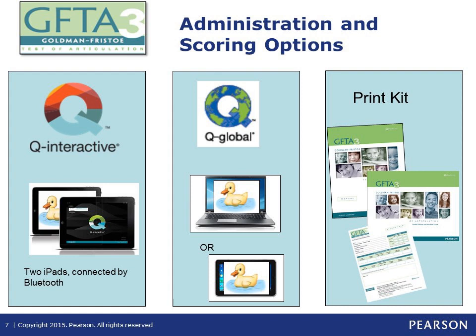Another digital offering is Q-global. Q-global offers digital administration on one screen, with a digital manual, a digital stimulus book, and scoring available, though none of these digital pieces are connected. You can display pictures to the child on any computer or tablet, search and highlight sections of the digital manual, and use a paper record form. After finishing testing, you enter the examinee's responses into Q-global to obtain a score report. You can also choose to score by hand using paper and pencil. More information about digital options will be shared later.